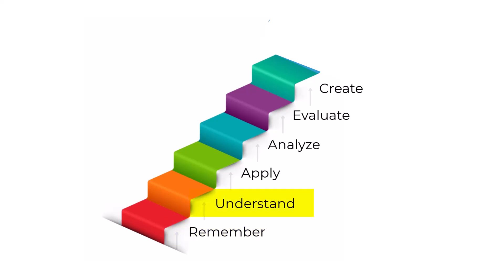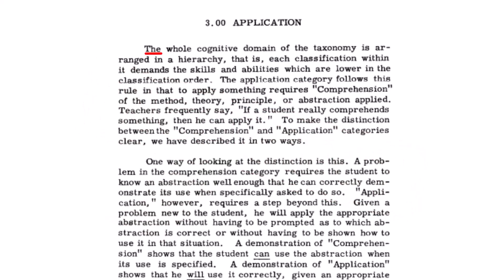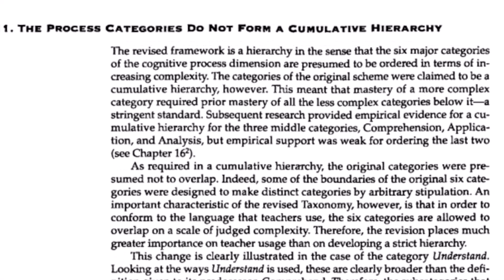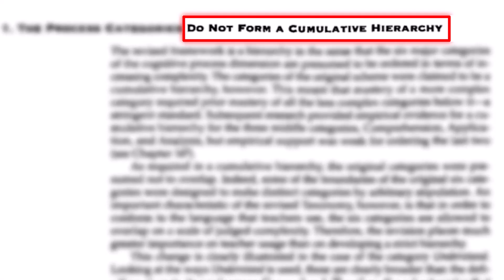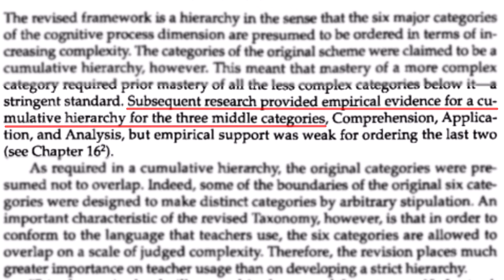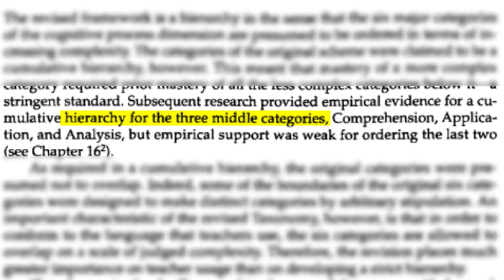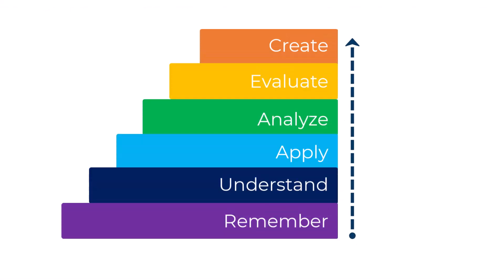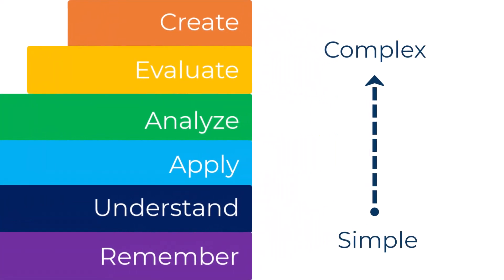For example, one major misconception about Bloom's taxonomy is that it is a lockstep hierarchy wherein each level is a requirement for the next. This isn't exactly the case. There is mention that the taxonomy is a hierarchy in the original 1956 text. However, after further investigation, this was adjusted in the more recent 2001 version. As stated in the revision, the empirical evidence suggests that the middle three levels—understand, apply, and analyze—may create a cumulative hierarchy, but not always. The order that you see here from low to high is in terms of general complexity, not steps to each other.